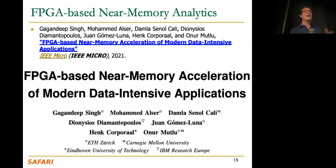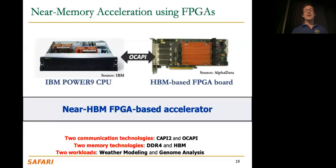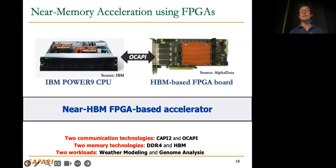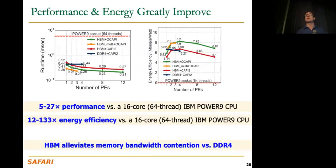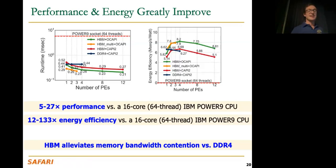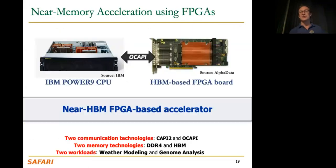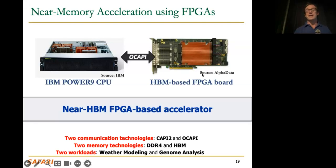One example: today you can do some analysis using FPGAs, which is nice because you have FPGA boards with high-bandwidth memory attached to them. You can essentially offload sophisticated parts of the computation, specialize it in reconfigurable logic, and enable that computation to have access to high-bandwidth memory with low latency and reasonably low energy — without going through the CPU. This is an example of memory-centric computing — a baby step toward it. If you do this carefully you get significant performance and energy benefits on weather modeling and genome analysis.